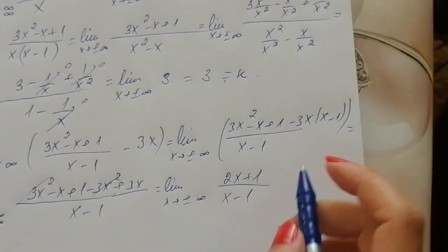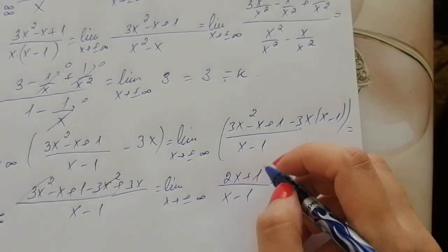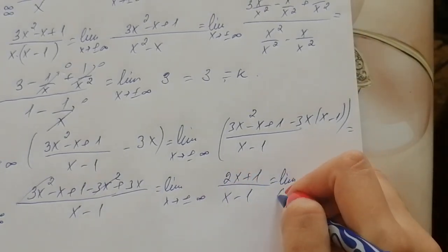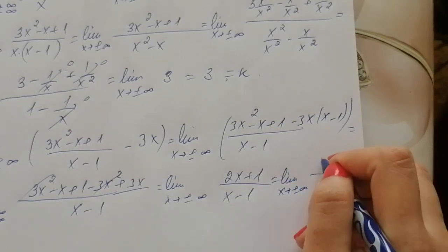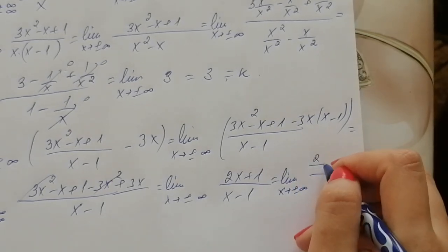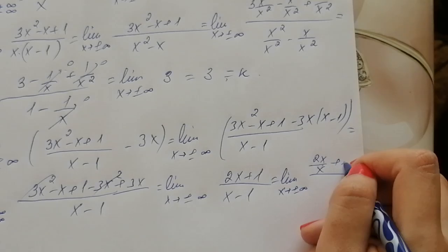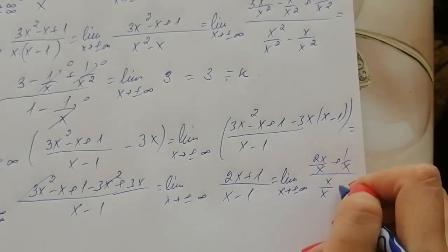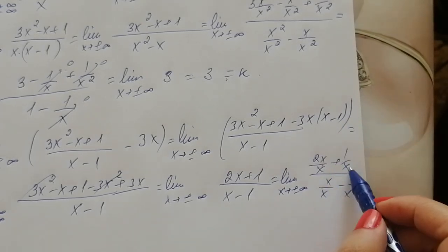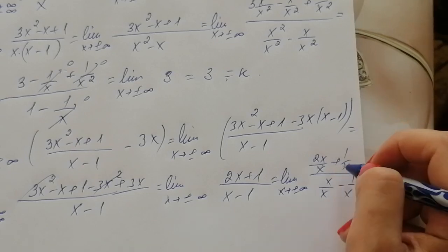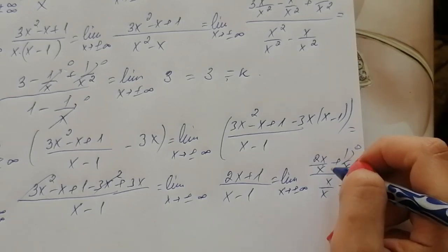And if we divide both numerator and denominator by the highest power we're going to get, 1 over infinity is 0, therefore...